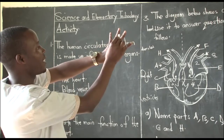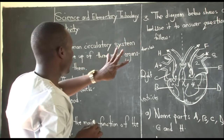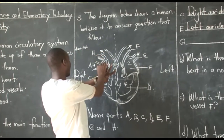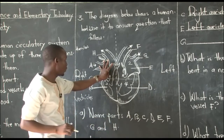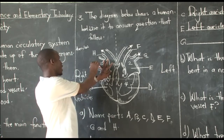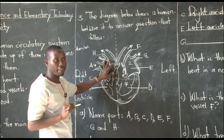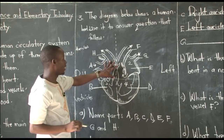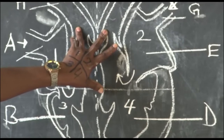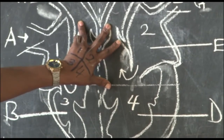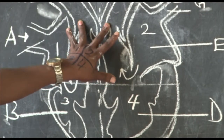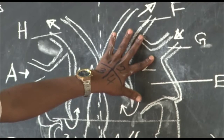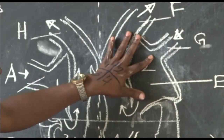Finger number four is the pulmonary vein, carrying blood with oxygen back to the heart. Once it enters the heart via the pulmonary vein, it is then pumped to all parts of the body through the major blood vessel — the aorta, which is finger number three. So we have: vena cava, pulmonary artery, aorta, and pulmonary vein.